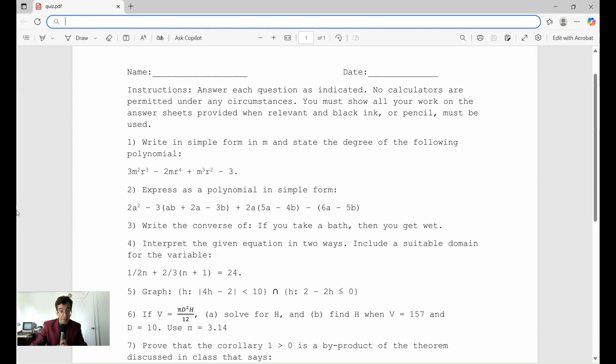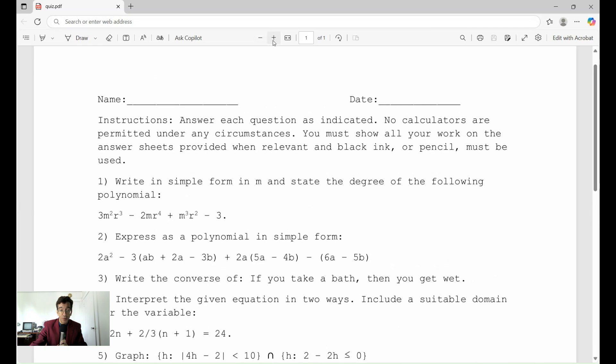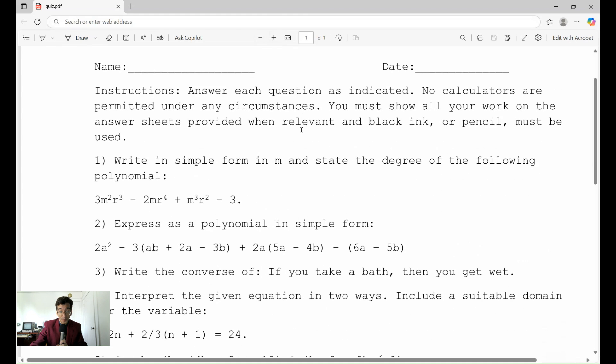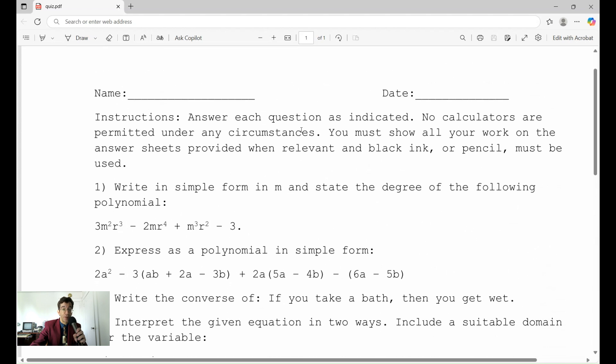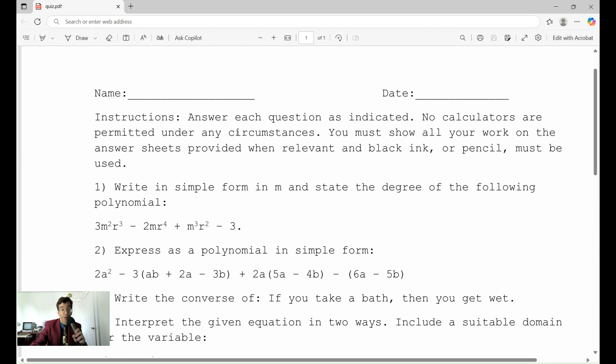So here is the quiz. You should be seeing on your screen the quiz. I'm going to try and make it a little bit larger so that if you want to take a picture of it or if you want to follow along. Usually my quizzes are 10 questions, 10 points each. So the instructions are answer each question as indicated. No calculators are permitted under any circumstances. You must show all your work on the answer sheets provided when relevant. And you can use black ink or pencil that must be used. And when we grade them, we grade in red ink, which is the classical way of doing things. And I know some clowns, they call themselves educators, but they're not. They say that that's negative and that only creates bad feelings. Go away.